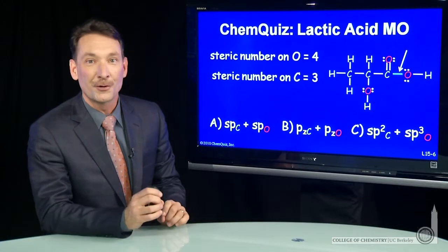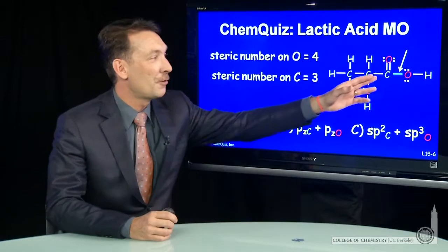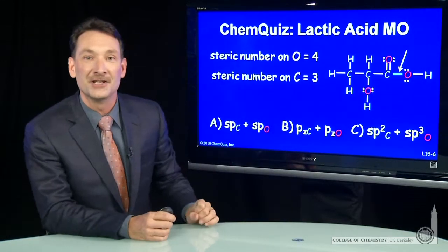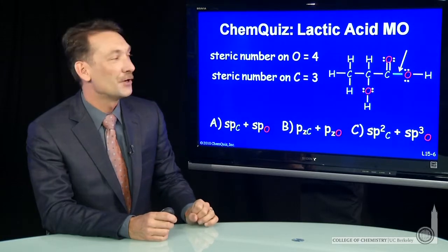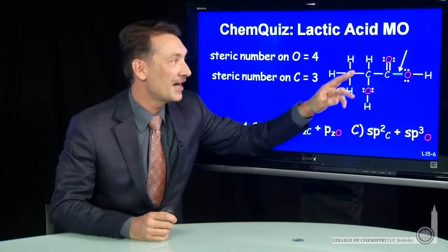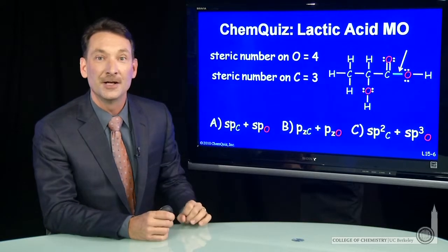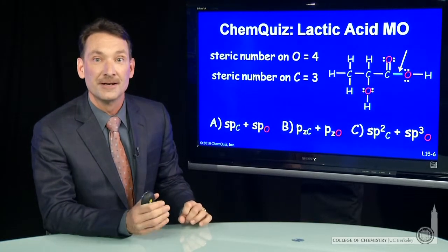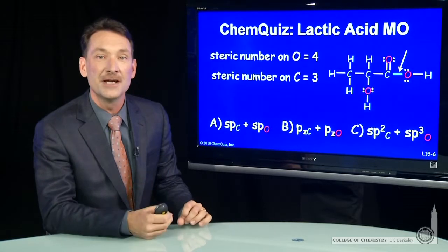We're talking about the molecular orbitals that are formed between the carbon and the oxygen in lactic acid. So the carbon has to accommodate this oxygen, this oxygen, and this carbon. It'll be SP2 hybridized, accommodate three things with three equivalent orbitals.